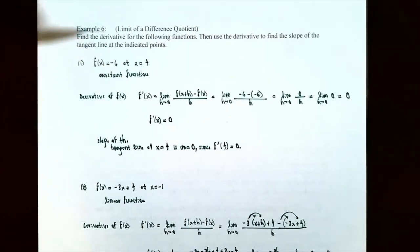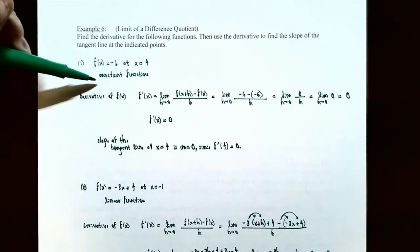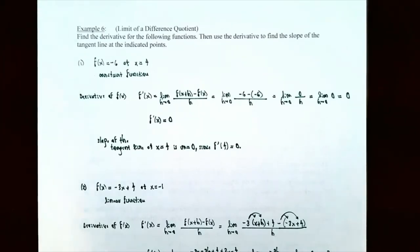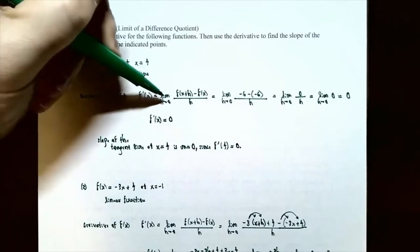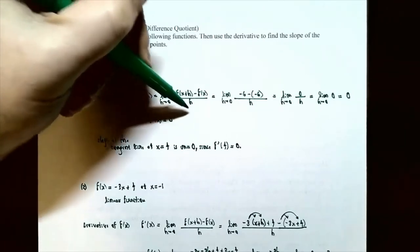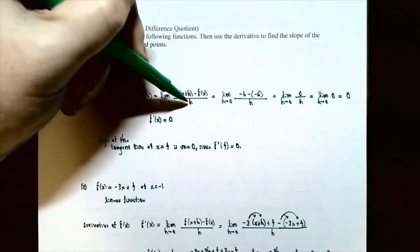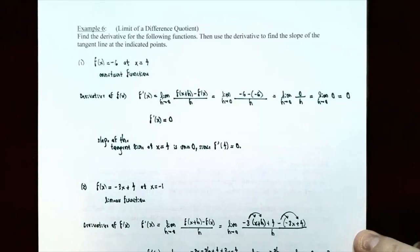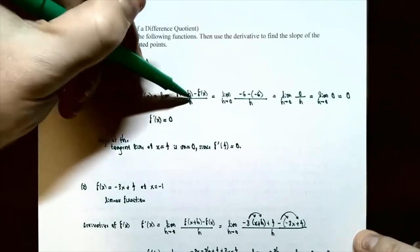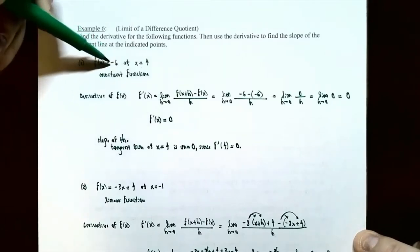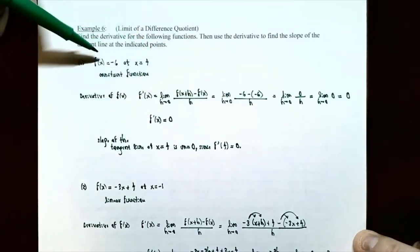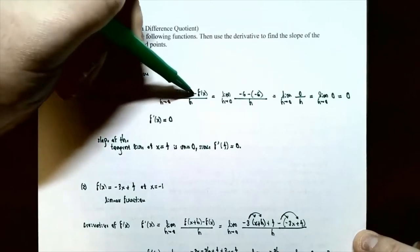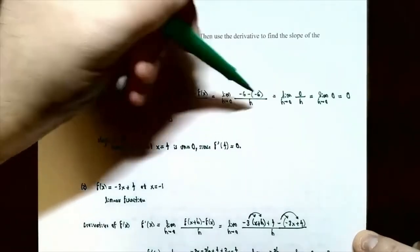Notice that this function is always y equals negative six — the y value is always negative six no matter what the x value is. This is called a constant function. So the derivative f prime of x is the limit as h approaches 0 of the difference quotient: f of x plus h subtract f of x, all divided by h. Plugging in, there is no x to substitute, so f of x plus h equals negative six and f of x equals negative six. The numerator is negative six subtract negative six.